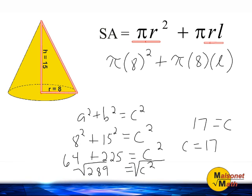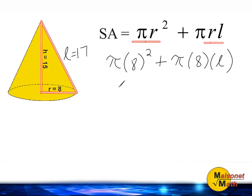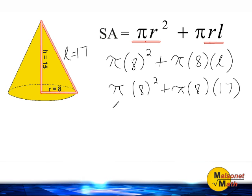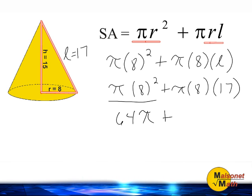So I am going to label the slant height l as 17 units. Now that we know the slant height is 17 units, we are going to plug that into our equation: pi times 8 to the second power, plus pi times 8 times the slant height, which is now 17 units. 8 to the second power is 64, so we have 64 pi plus 8 times 17, which is 136 pi.